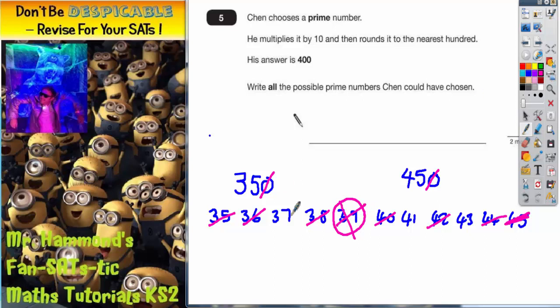So we're left here with 37, 41 and 43 are our prime numbers. So these are the numbers here that he could have chosen.